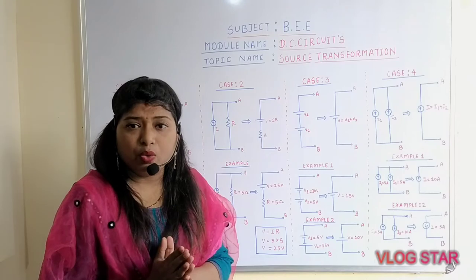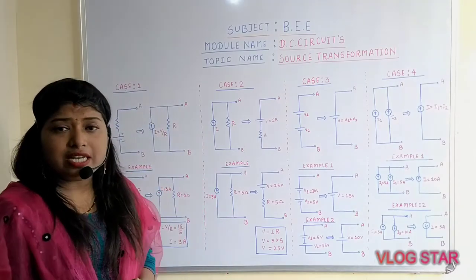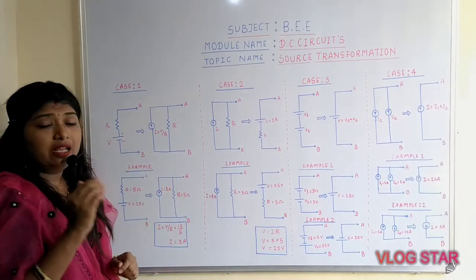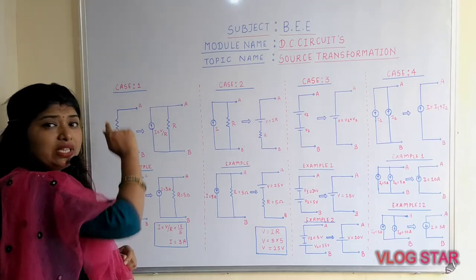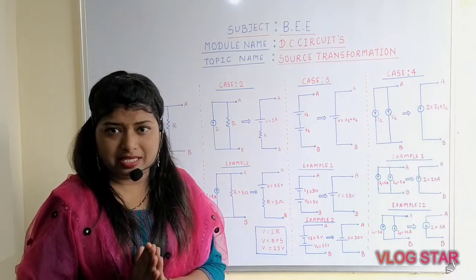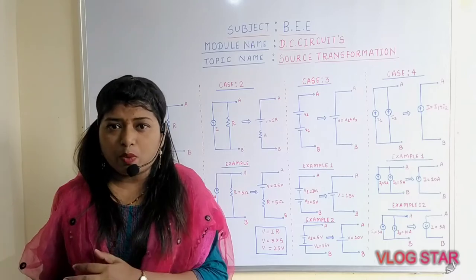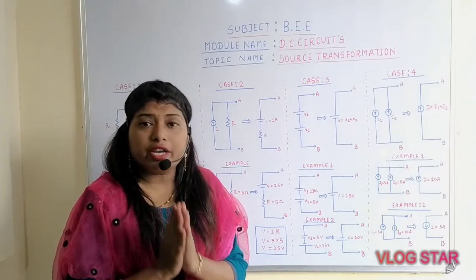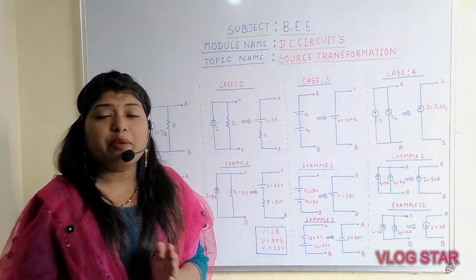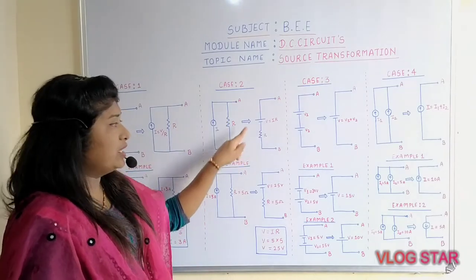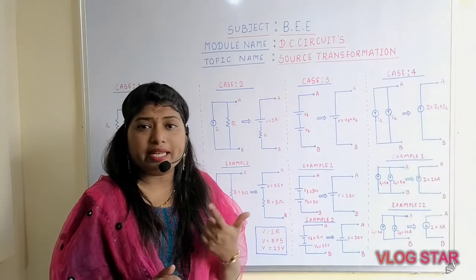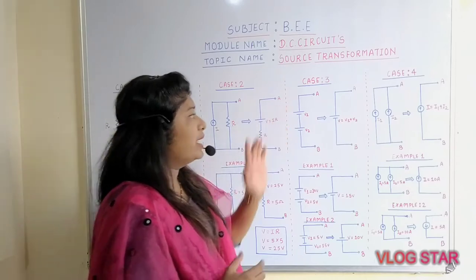To recap: case number one is that if the voltage source is in series with the resistance, it can be converted into a current source parallel with the same resistance. Case number two is that if the current source is parallel with the resistance, it can be converted into a voltage source in series with the same resistance.